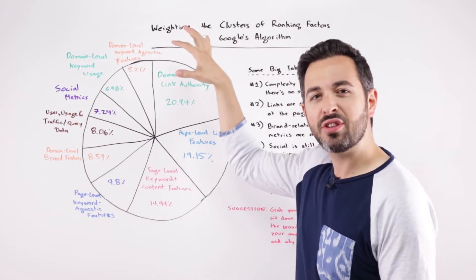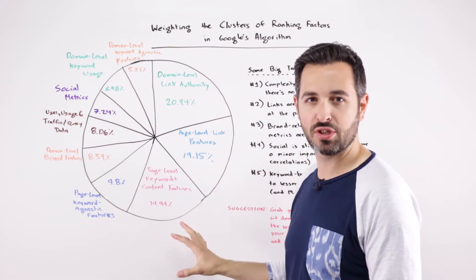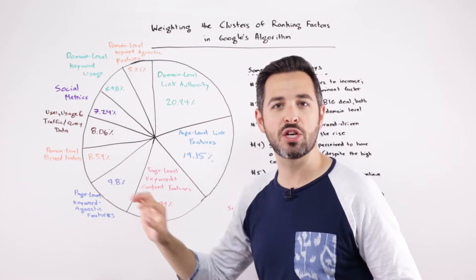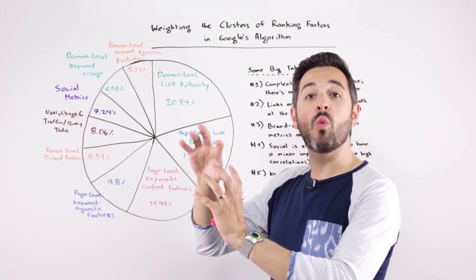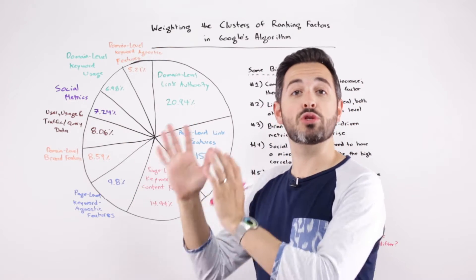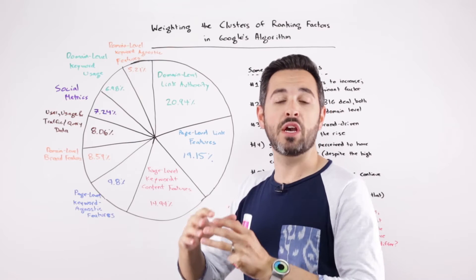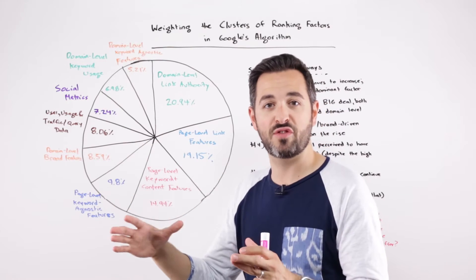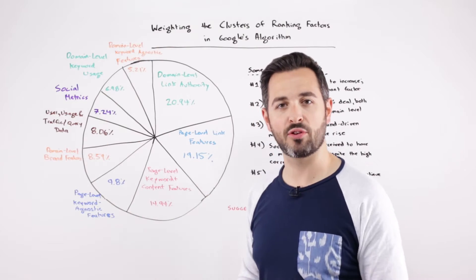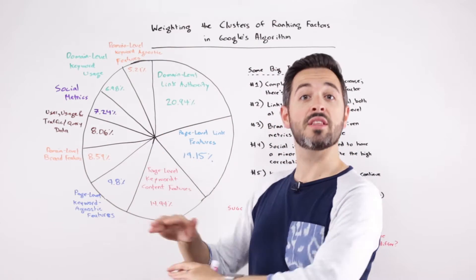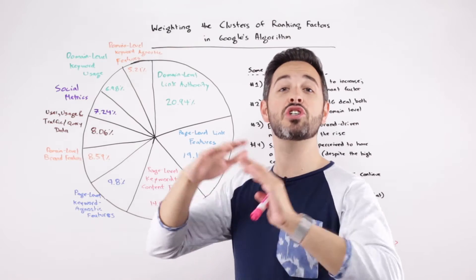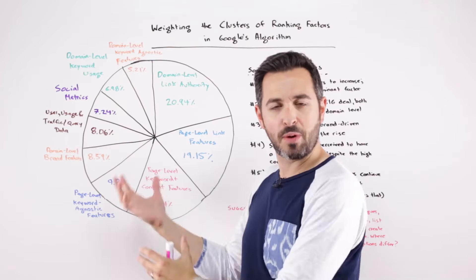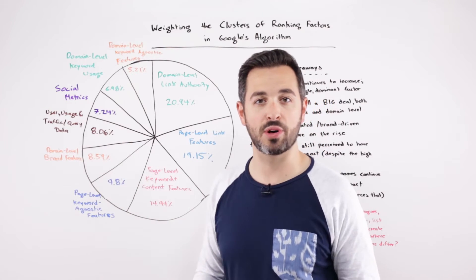We ask them, based on these thematic clusters of ranking elements — things like domain-level link authority versus page-level keyword agnostic features — weight them for us. Give a percentage that you would assign if you were giving an overall assessment of the importance of this factor in Google's ranking algorithm. This is opinion data. This is not fact. This is not actually what Google's using. This is merely the aggregated collective opinions of a lot of smart people who study this field pretty well.